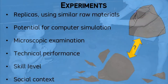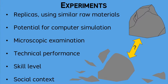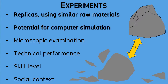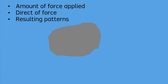Another way to learn about stone tools is through experiments. Many experiments involve replicas using similar raw materials as the stone artifacts. New developments have been possible in computer simulation, and still more possibilities have emerged with microscope examination. In all of these cases, the analysis concentrates on the material-based technical performance of making or using stone tools, but you should remember about the intangible factors such as skill level and social context. Experiments need to account for the amount of force applied, the direction of force, and the resulting patterns.